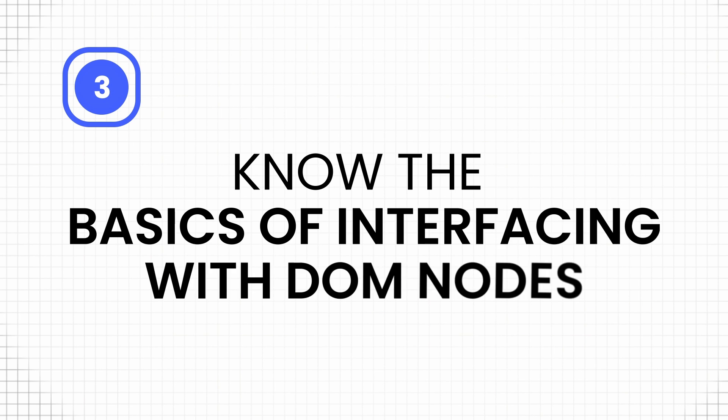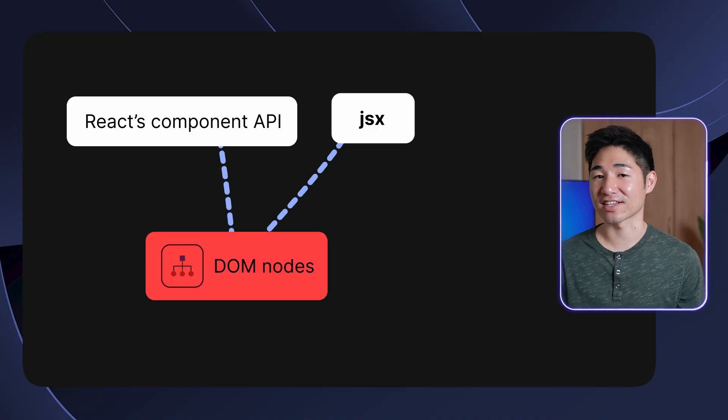Point number three is to know the basics of interfacing with DOM nodes. React for the web is ultimately a convenience built on top of the DOM and JavaScript web APIs. Sometimes we need to interface with DOM nodes directly, but React's component API and JSX don't give us direct access — this is where refs come in. Refs are React's way of letting us access the underlying DOM element. They're also a general-purpose tool for maintaining data local to a component, much like state, but without triggering a re-render. Understand refs — it's going to come in handy.